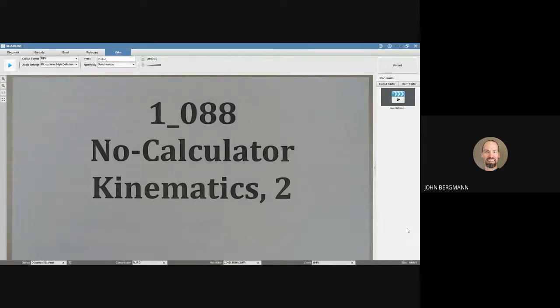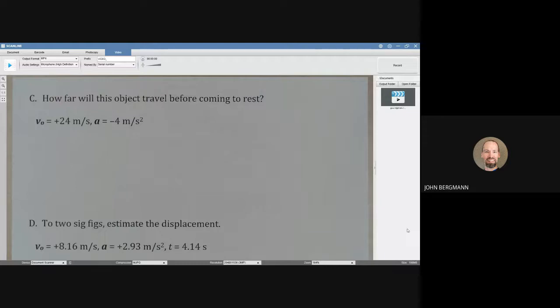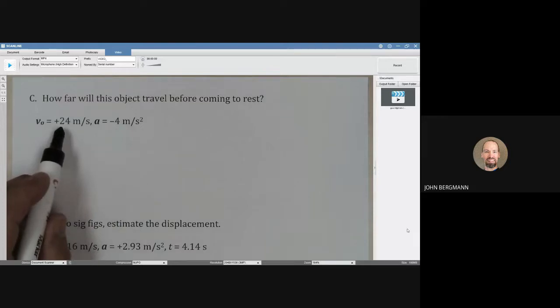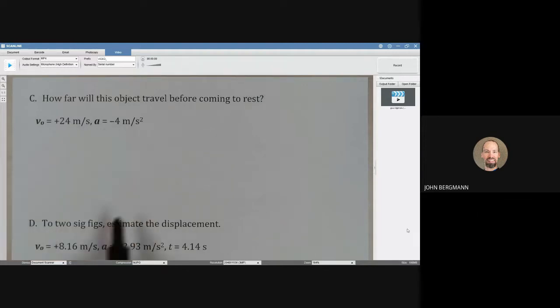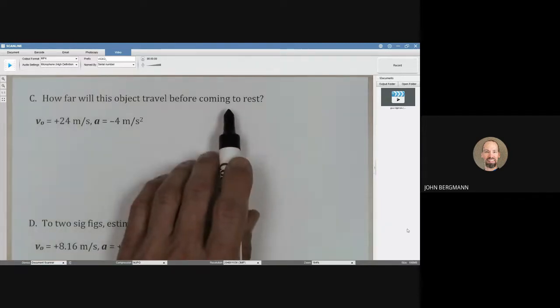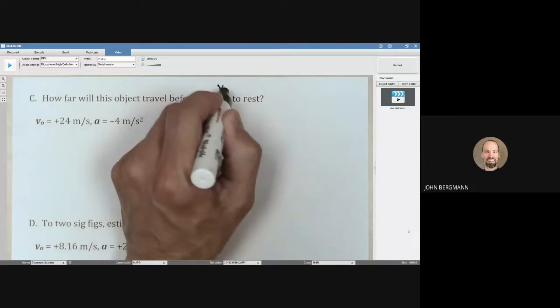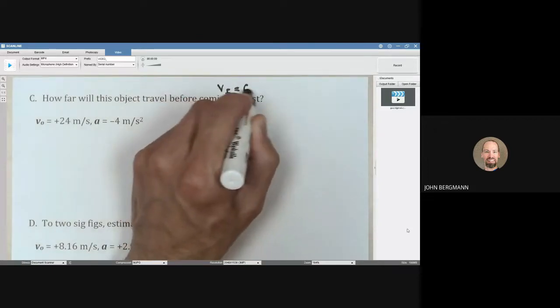This is our second video on doing kinematics problems without a calculator. How far will this object travel before coming to rest? All right, so there's our initial velocity. It's a positive number. The acceleration is negative, which means this object is going to be slowing down. If something comes to rest, that means VF has to be zero.